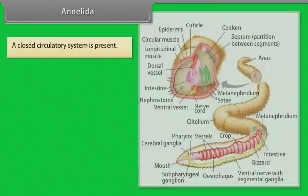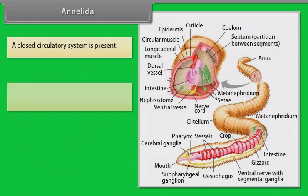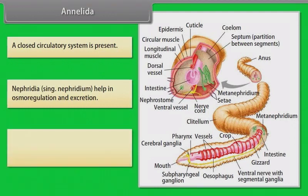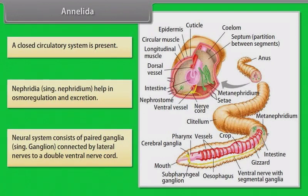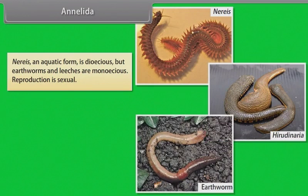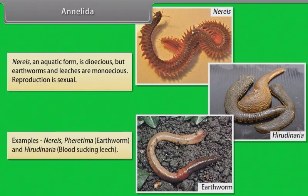A closed circulatory system is present. Nephridia (singular: nephridium) help in osmoregulation and excretion. The neural system consists of paired ganglia (singular: ganglion) connected by bilateral nerves to a double ventral nerve cord. Aquatic forms are dioecious, but earthworms and leeches are monoecious. Reproduction is sexual. Examples: Pheretima, that is earthworm; Hirudinaria, that is blood-sucking leech.